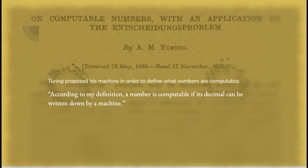This is Turing's 1936 paper. And this is a very important point about what numbers are. According to my definition, a number is computable if its decimal can be written down by a machine. Now, that seems straightforward to us now, but it was a breakthrough when he first proposed it.